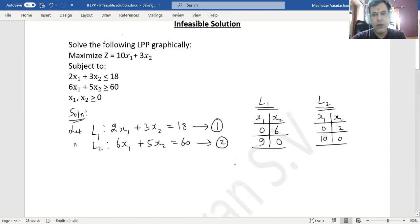Now we have the coordinates for each of the lines. This one will be 0, 6. This one will be 9, 0. And this one will be 10, 0.